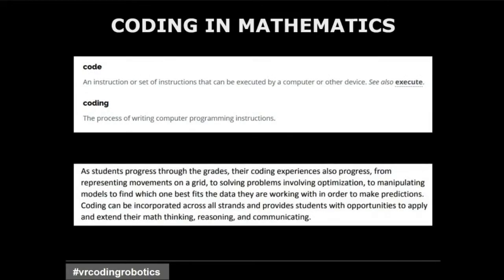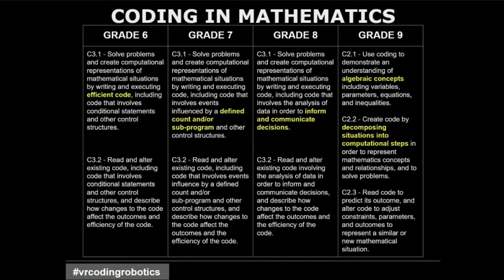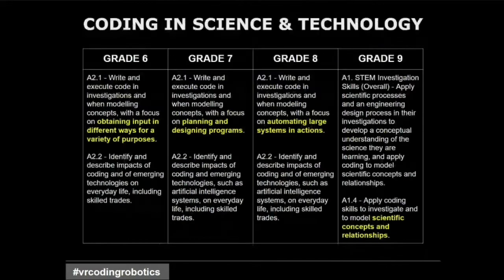If you look at coding in the mathematics curriculum, a code is an instruction or set of instructions that can be executed by a computer or other device. The process of writing computer programming instructions is what coding is. The coding expectations have a progression that flows through grades 6, 7, 8, and then to 9. The highlighted areas show the progression through the grades, sitting in the elementary curriculum in strand C at expectations C3.1 and C3.2, and then in grade 9 in the C strand with C2.1, C2.2, and C2.3.